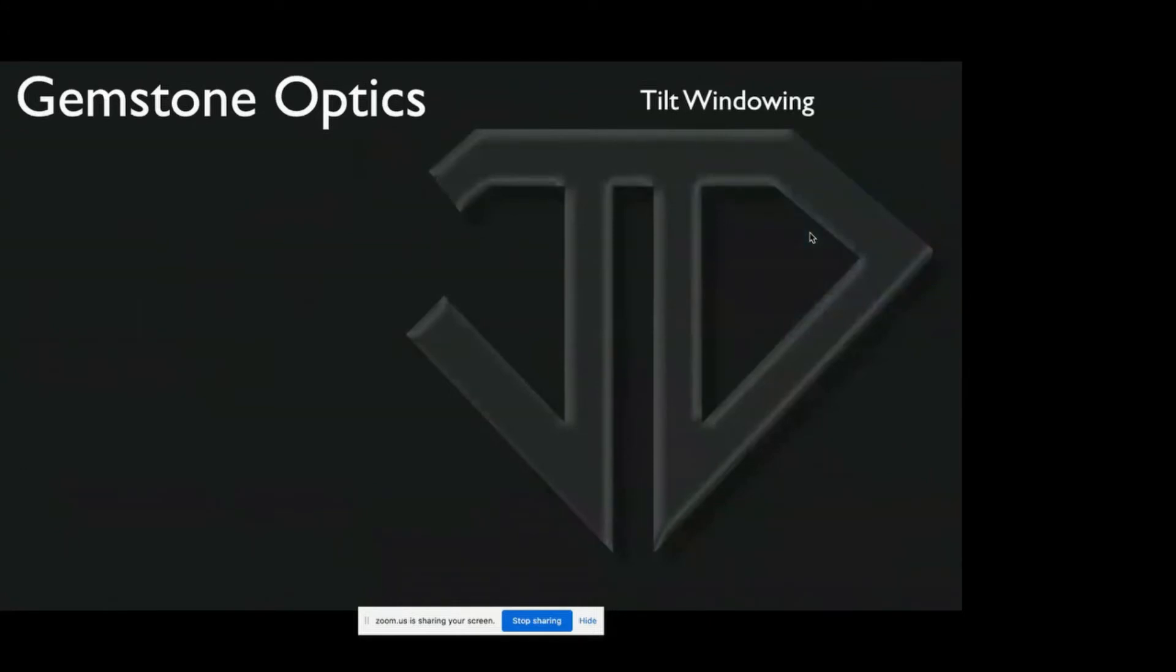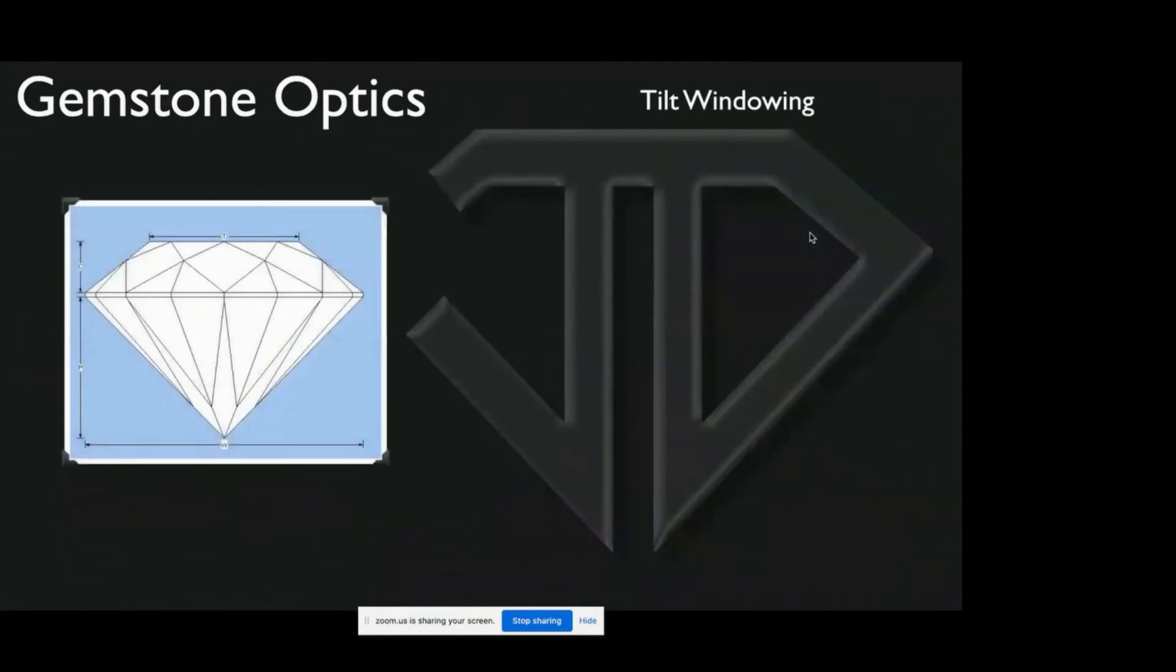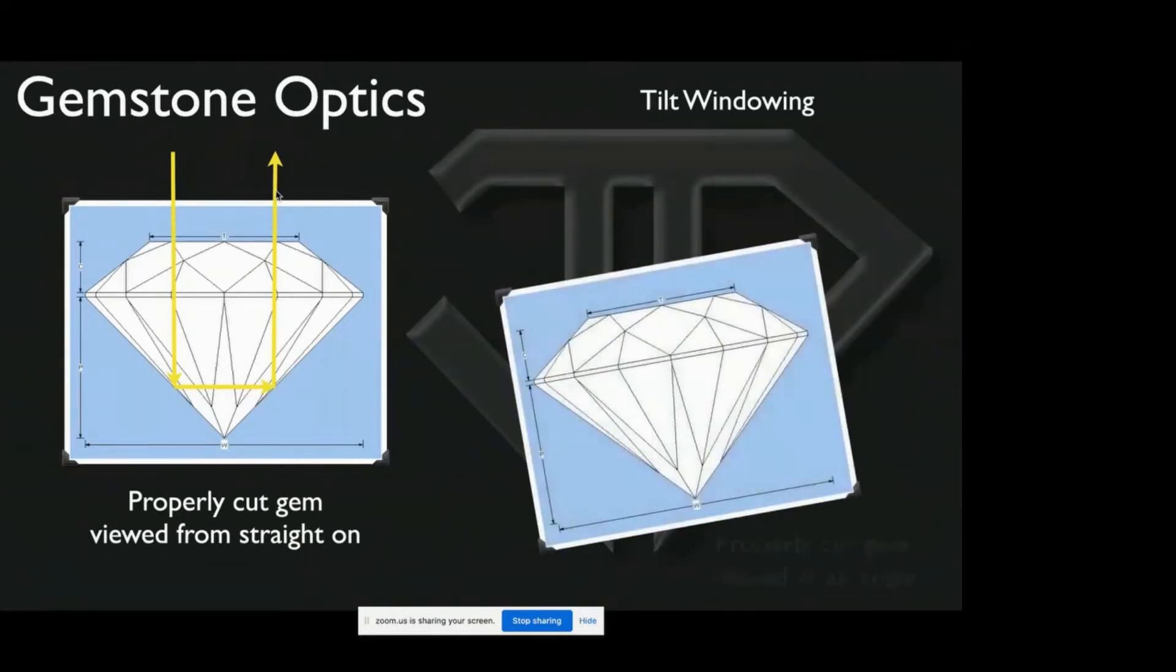Another thing that is interesting is that also because of the rules of optics, a properly cut gem when viewed from straight on—simplifying matters—the light will take roughly this path. It'll take a sort of U-shaped path and be bounced back to the viewer. However, the exact same gem or the exact same angles on the gem when tilted...